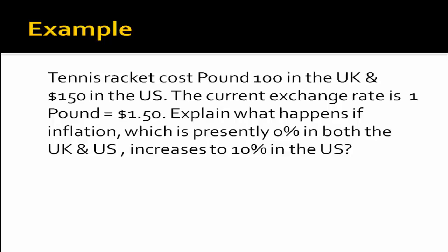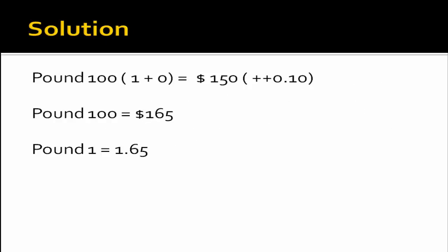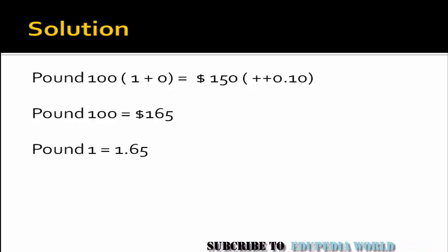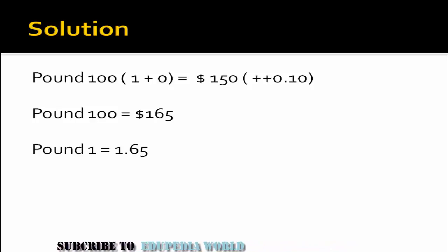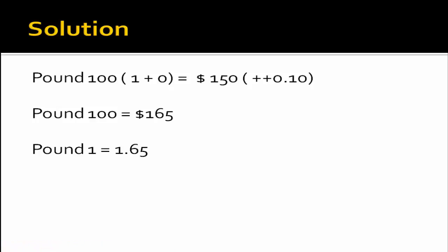Let's take one more example. A tennis racket costs pound 100 in UK and dollar 115 in the US. The current exchange rate is pound 1 equals dollar 1.50. If inflation is presently zero percent in both countries but increases to 10% in the US: pound 100 equals dollar 150. After one year, the pound remains 100 (zero inflation) while dollar 150 rises by 10%, giving dollar 165. This implies pound 1 equals dollar 1.65 — up from 1.50 — so the pound is at a premium and the US dollar is discounted. This confirms that a currency with a high inflation rate tends to become weaker.